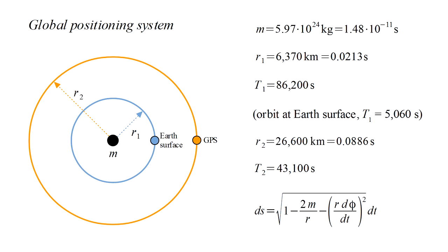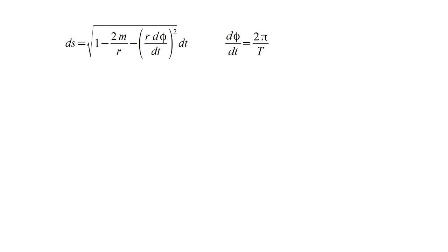For both clocks, we use the form of the metric for motion at fixed r value. That metric is shown here. Angle phi changes by 2 pi radians over period t, so we can replace d phi over dt by 2 pi over t. Under the square root, we have 1 minus very small quantities. An excellent approximation for square root 1 minus x is 1 minus 1 half x when x is small. So we can write our metric as ds equals 1 minus m over r minus 1 half the square of 2 pi r over t all times dt.